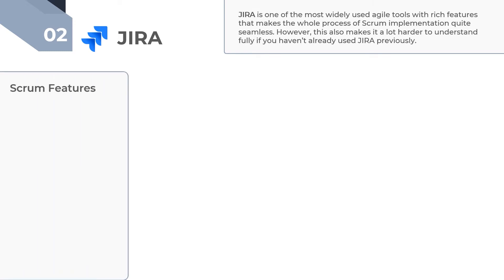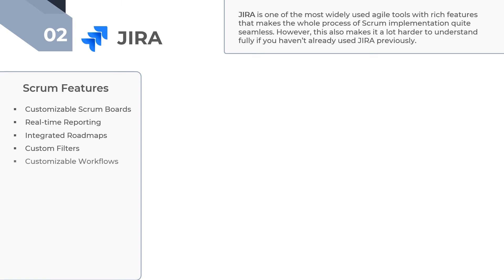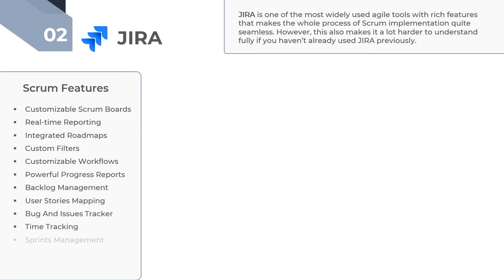Nevertheless, the software comes packed with features like customizable scrum boards, real-time reporting, and integrated roadmaps that enable teams to visualize the big picture across multiple projects. It also provides you an option to create custom filters using Jira Query Language to make the software even more useful. You also get to customize your workflows that match the work style of your company. Like any good scrum tool, it also offers an extensive list of integrations with developer tools for utmost traceability.